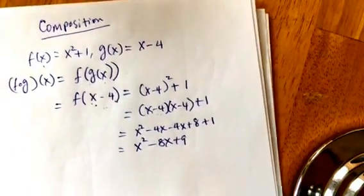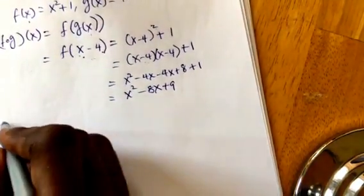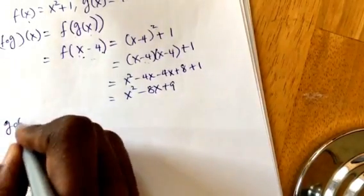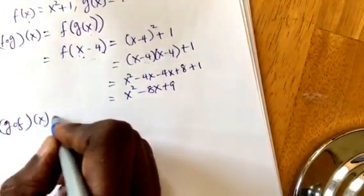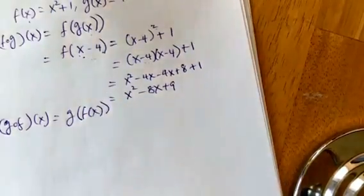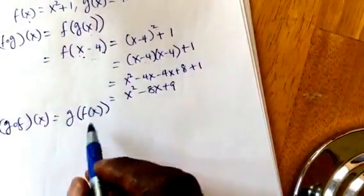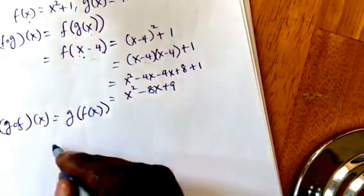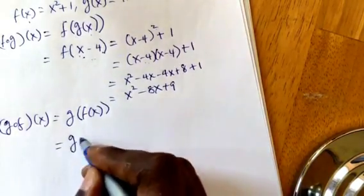How about if we do the other one? So if you have g of f of x, this is the same as saying g, and then instead of the x, the f of x becomes the g. The f of x becomes the x for the g.